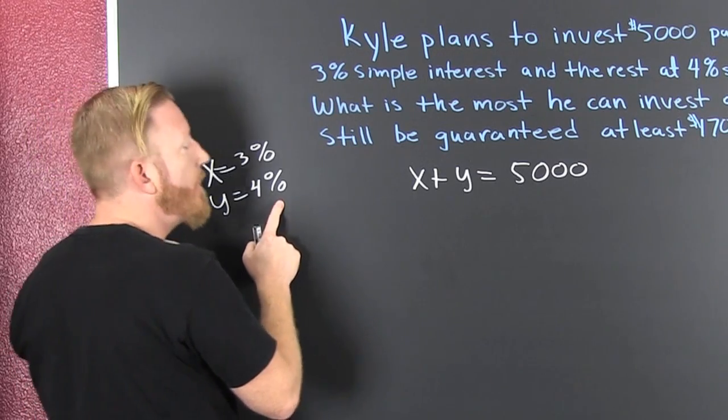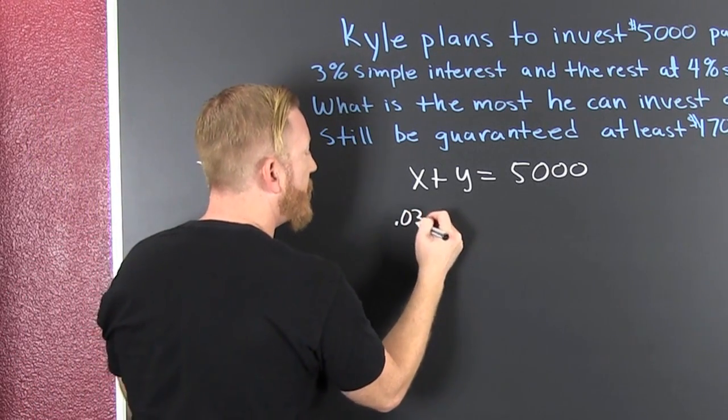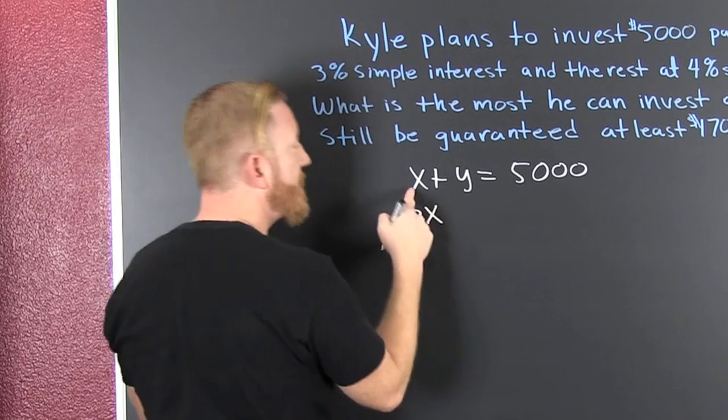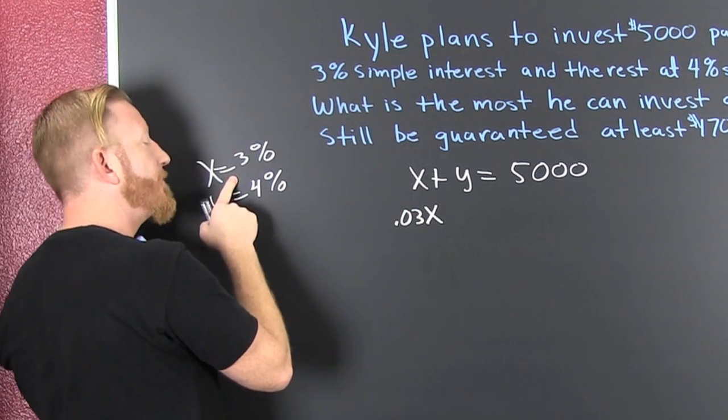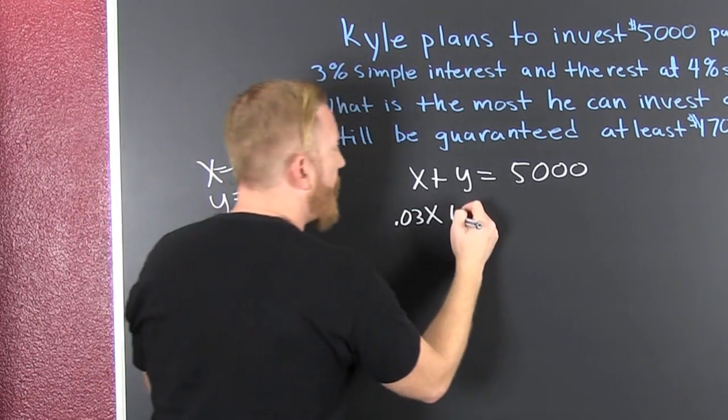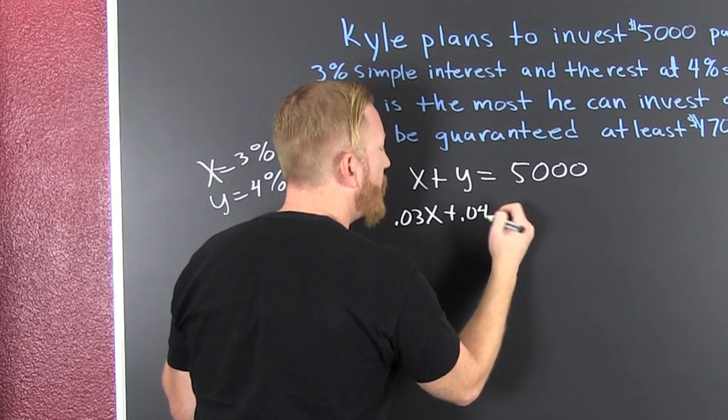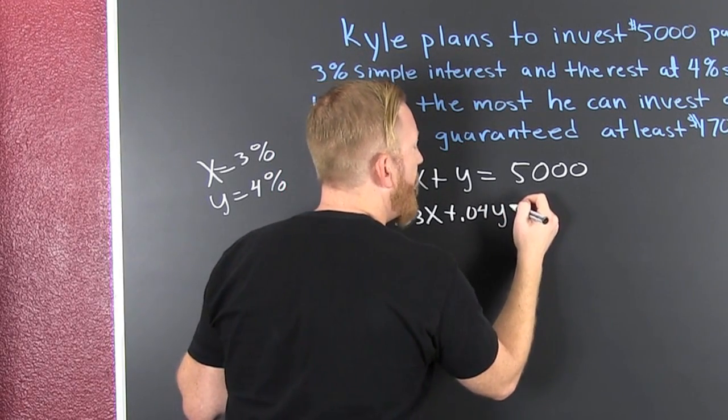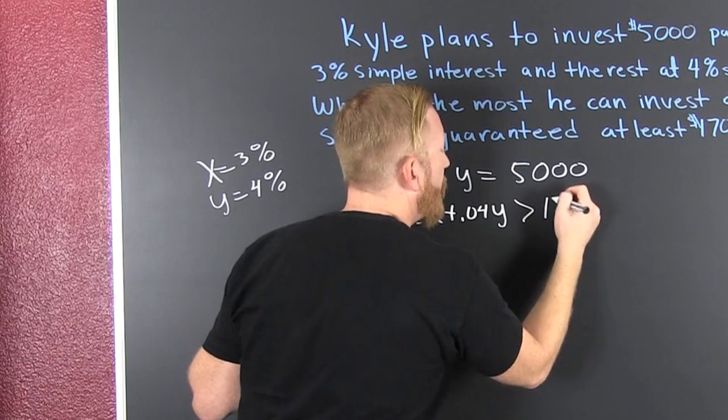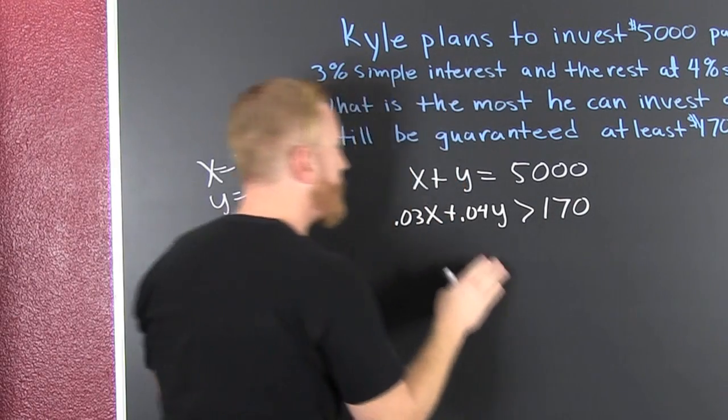What I have: 0.03 times whatever he invests, that's the money he's going to get back from the 3%, plus 0.04 times Y. That needs to be bigger than $170.